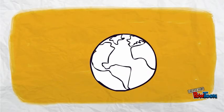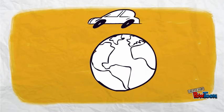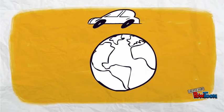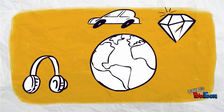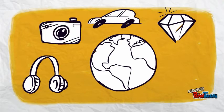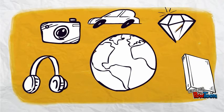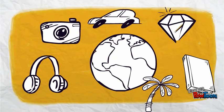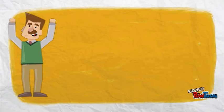You drive to class in a car made of parts manufactured in more than a dozen countries around the world. Then you open up your economics book published in America and printed on paper made from trees grown in Oregon. During your day, you also use many other products made from everywhere in the world.